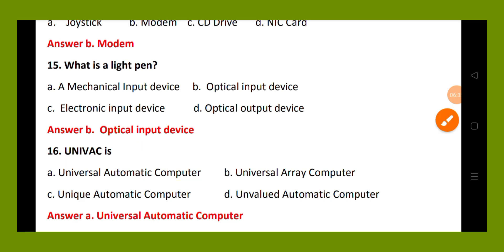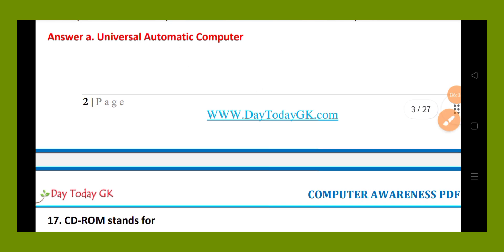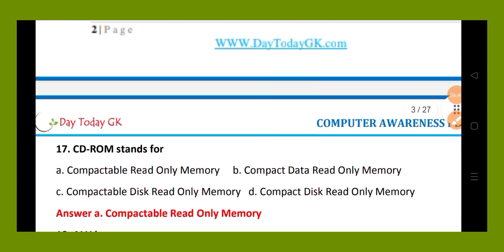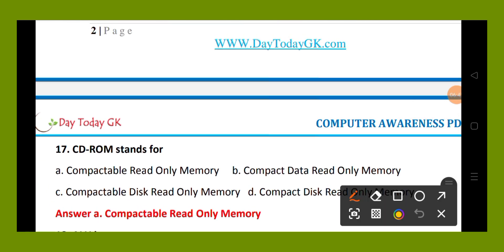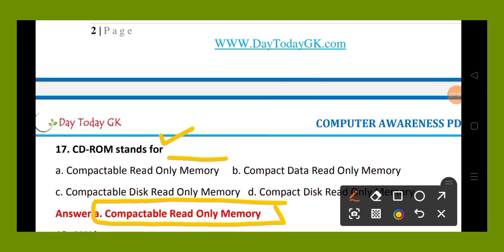Question number 17. CD-ROM stands for: option A, compactable read-only memory; option B, compact data read-only memory; option C, compactable disk read-only memory; option D, compact disk read-only memory. The right answer is option A, compact disk read-only memory.